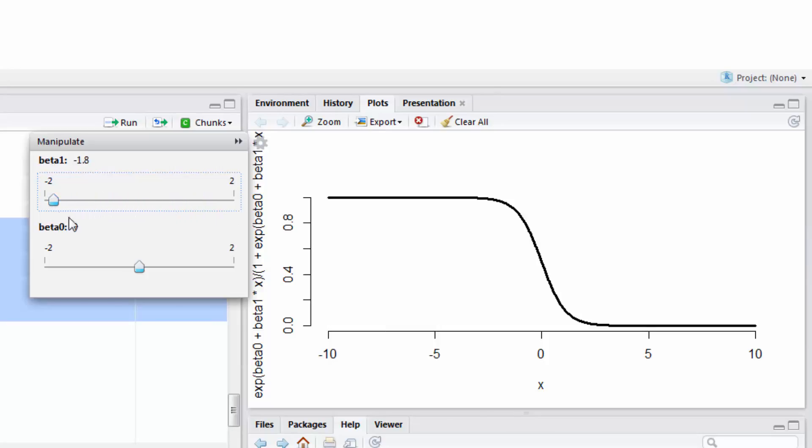And then if I go negative, it actually flips around. Then my beta zero curve, what happens to this? It just shifts it along. It's hard to tell because I'm keeping the x-axis here always the same, but it's just shifting the S curve to the left or to the right.